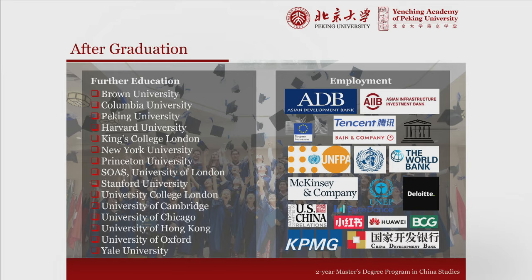Yanjing scholars are highly successful at moving into the next stage of their career upon graduation. On the left, you can see some of the top universities around the world where current Yanjing scholars are pursuing further graduate study. Roughly 20 to 30% of Yanjing scholars go on to further graduate study—generally at the doctoral level, but sometimes law school, other master's programs, or MBAs. The majority of Yanjing scholars move into the professional stage of their career, and on the right you can see consulting firms, government ministries, and international organizations where Yanjing scholars have found productive employment.